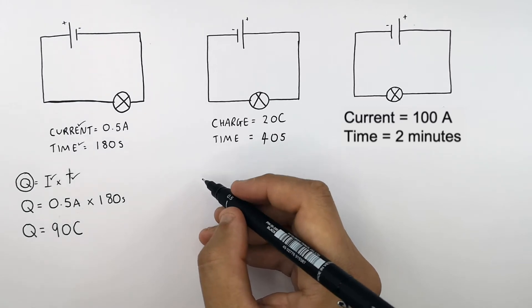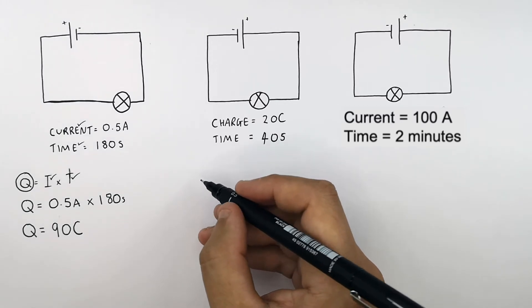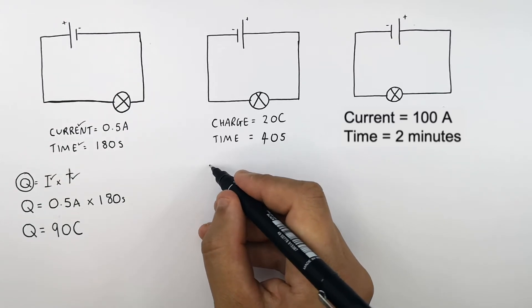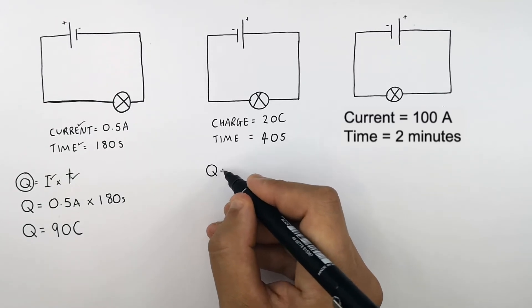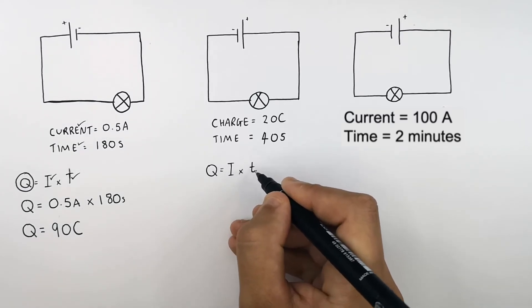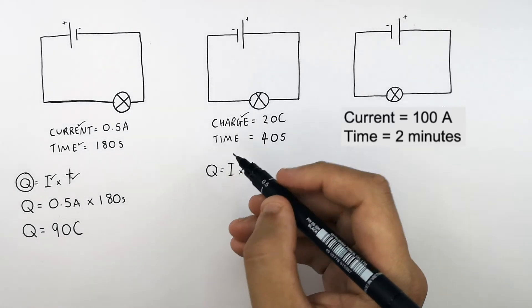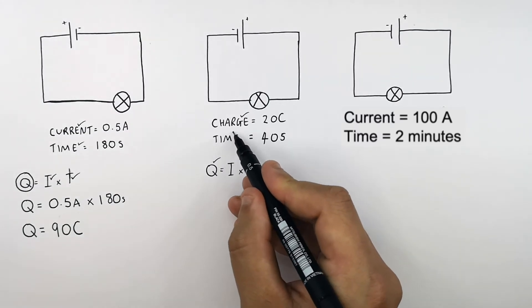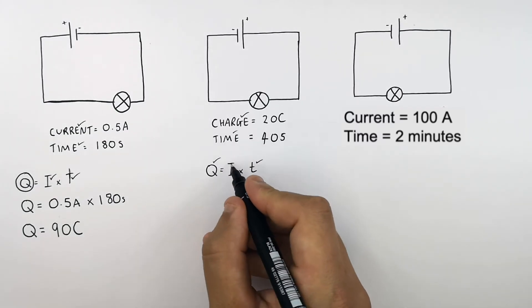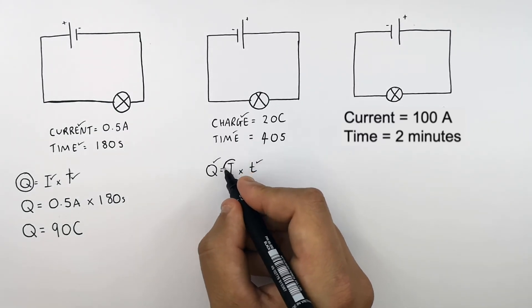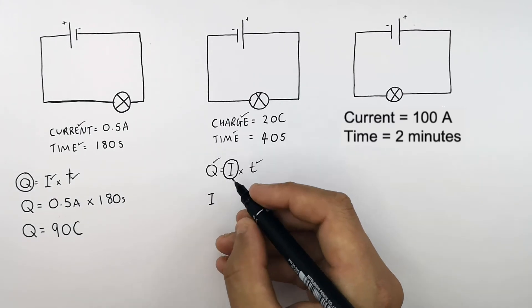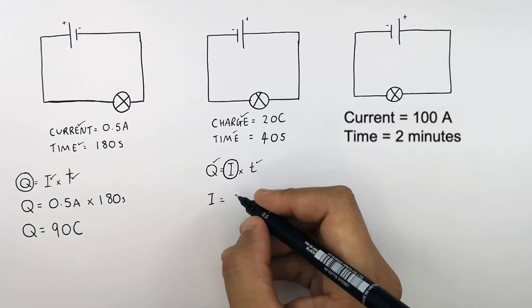In this question, you are asked to calculate the current flowing through the circuit. Recall Q equals I times T. You've got the charge, which is 20 coulombs, and T (the time), which is 40 seconds. We're trying to work out the current I, so you rearrange for I.